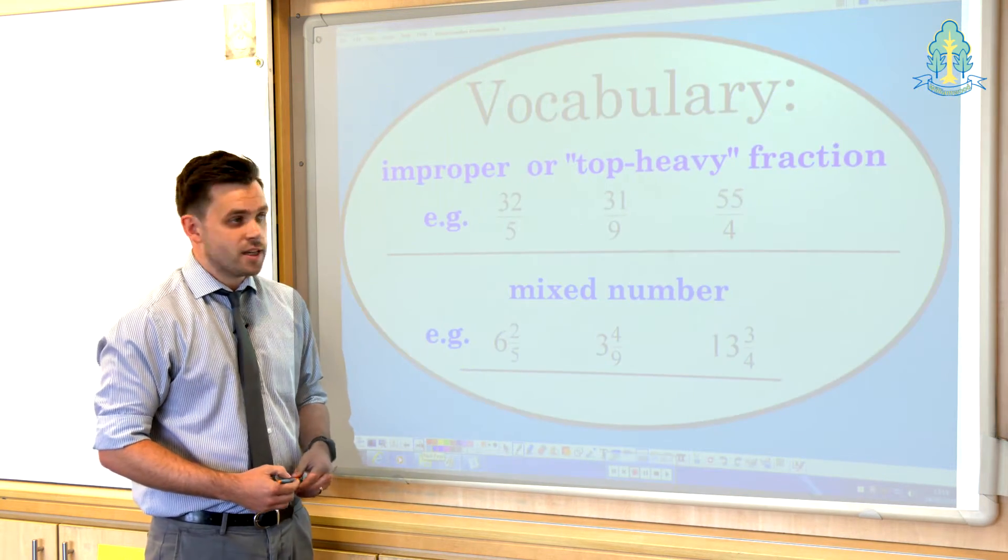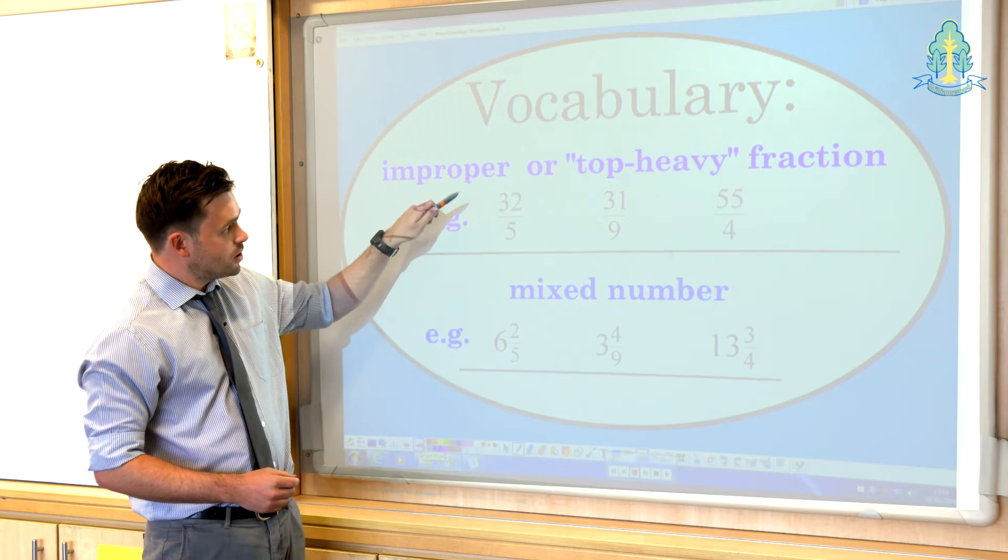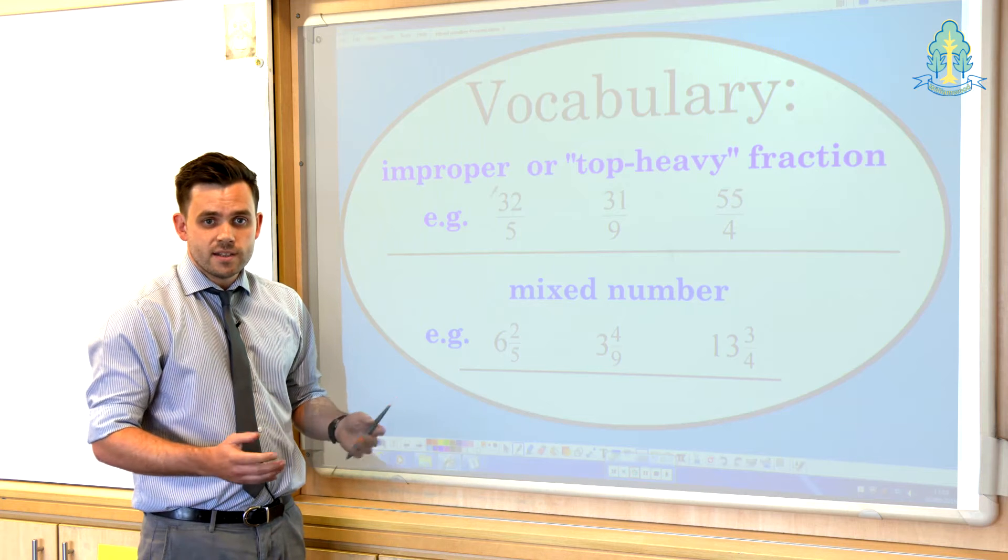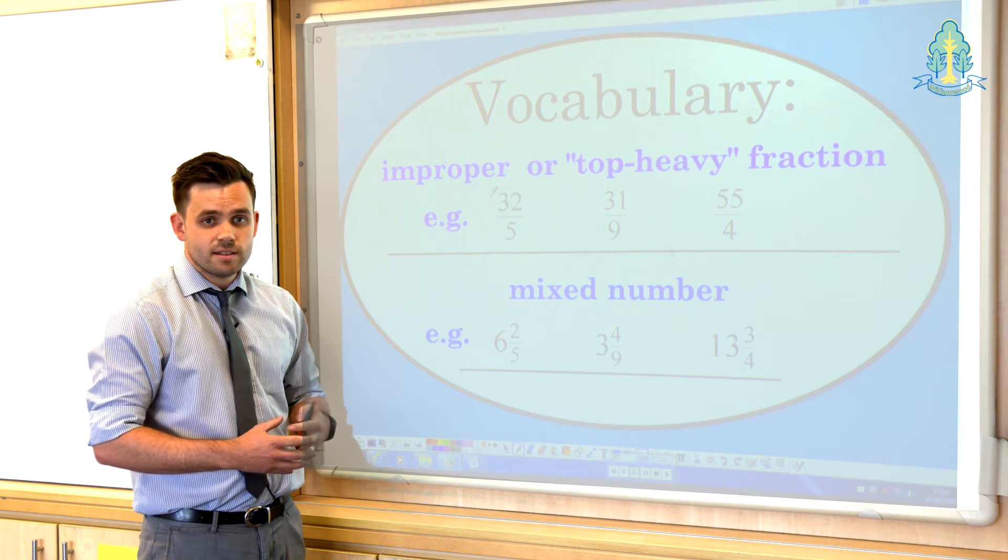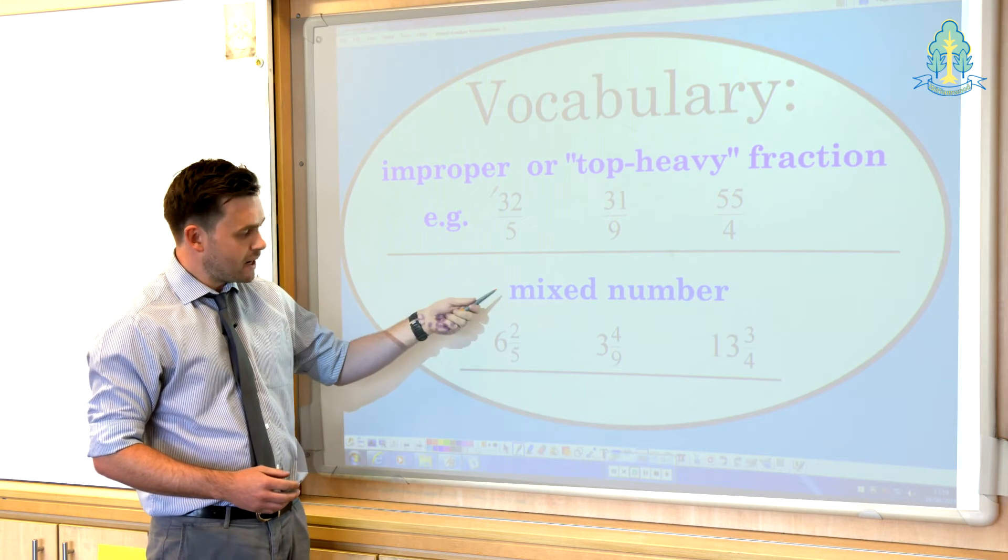Now an improper fraction, or a top-heavy fraction as we sometimes call it, is a fraction where your numerator, the top number, is greater than the denominator, the bottom number, as we see here with 32 fifths, 31 ninths and so on. Anything where the numerator is greater than the denominator creates a value that's greater than one, so these can also be expressed as a mixed number.